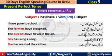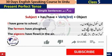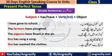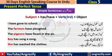Now let's see how to make simple sentences. The structure is: Subject + has/have + third form of verb + object. For example: I have gone to school — میں سکول جا چکا ہوں. The farmers have plowed — کسان ہل چلا چکے ہیں. The pigeons have flown in the air — کبوتر ہوا میں اڑ چکے ہیں. Boy has sung a song — لڑکا گانا گا چکا ہے. She has washed the clothes — وہ کپڑے دھو چکی ہے.